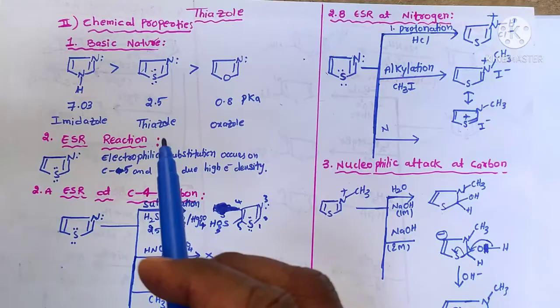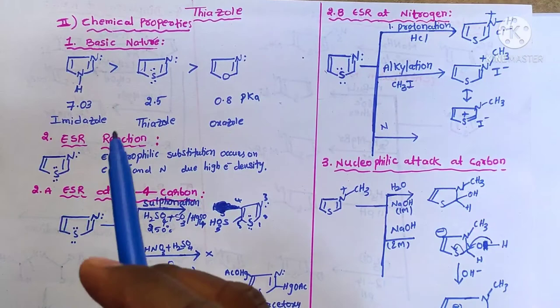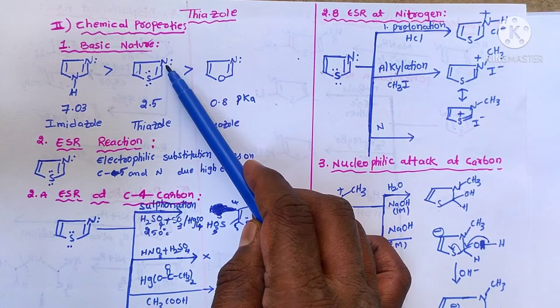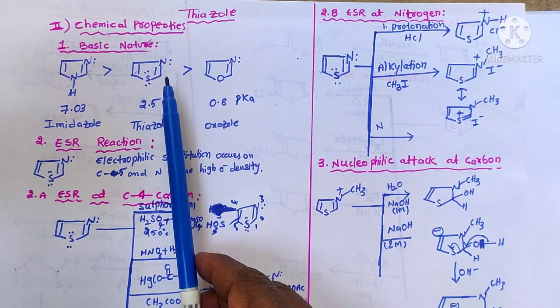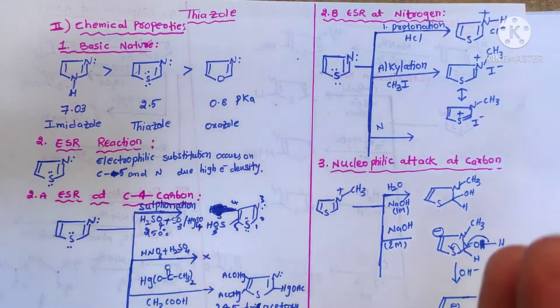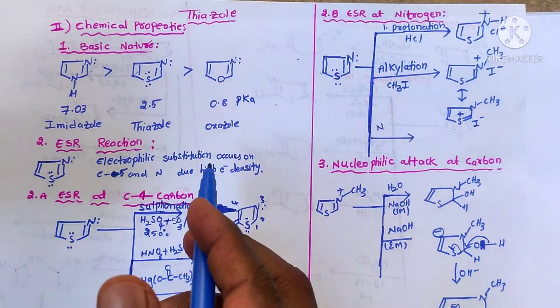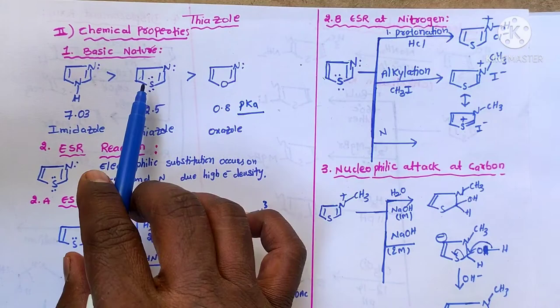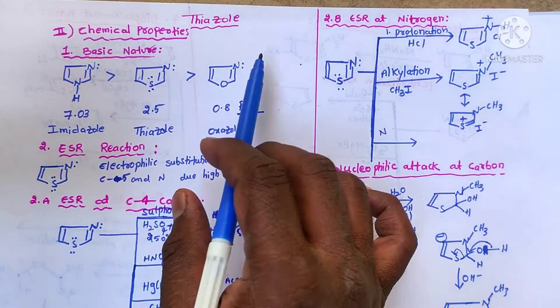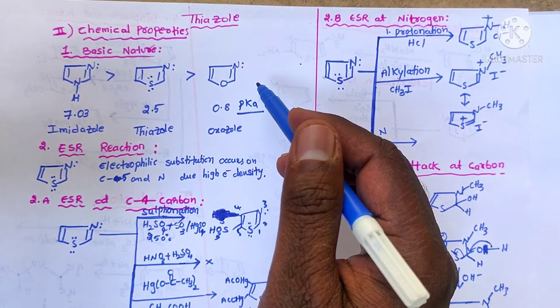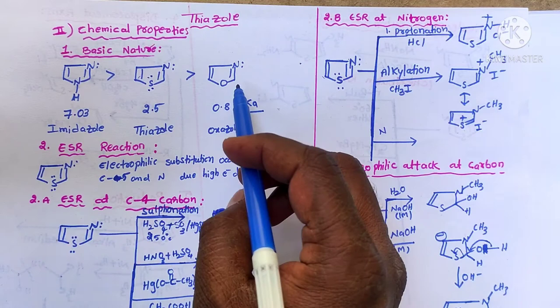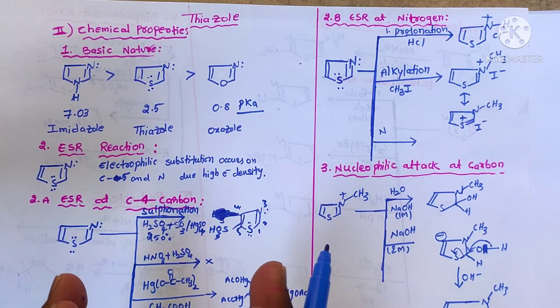Now we discuss the chemical properties of thiazole. First is the basic nature: due to the presence of nitrogen, thiazole acts as a base. Thiazole's structure is very similar to imidazole and oxazole. Basic nature is directly proportional to the pKa values. The pKa of thiazole is 2.5, imidazole is 7.03, and oxazole is 0.8. So thiazole is a weaker base than imidazole but a stronger base than oxazole.